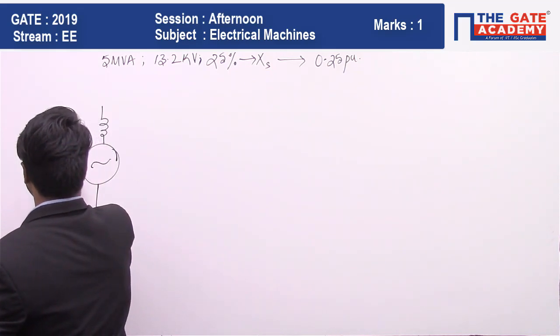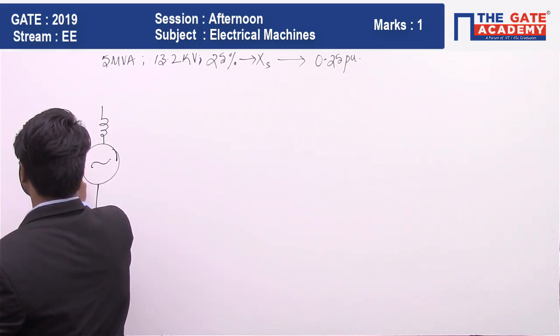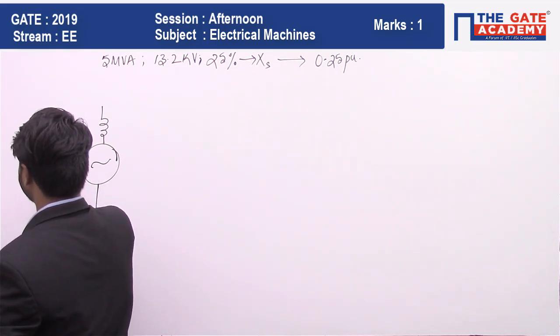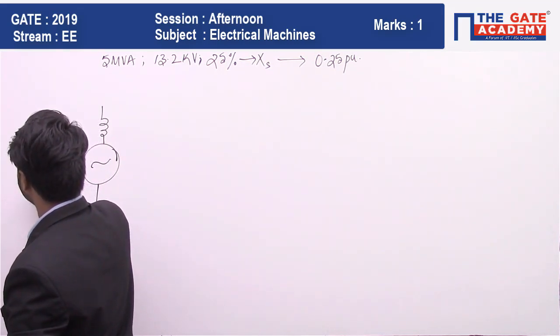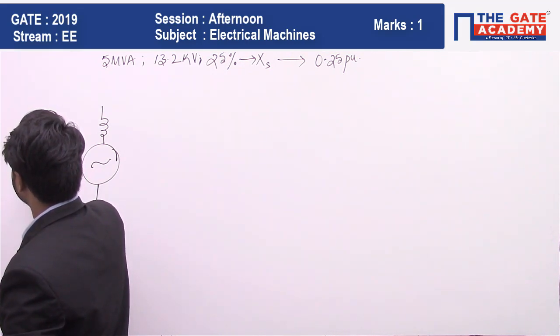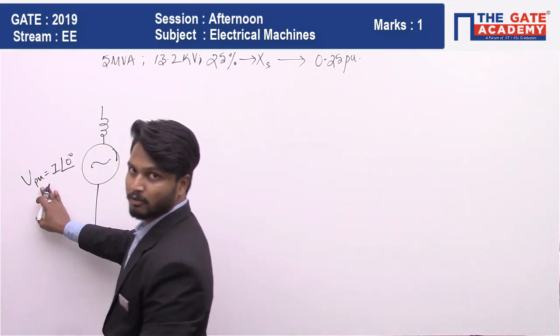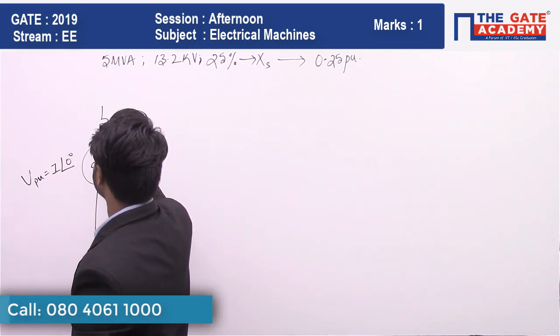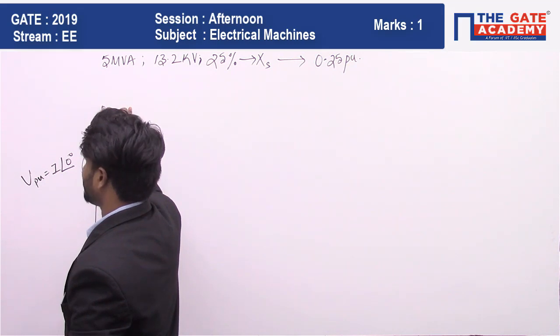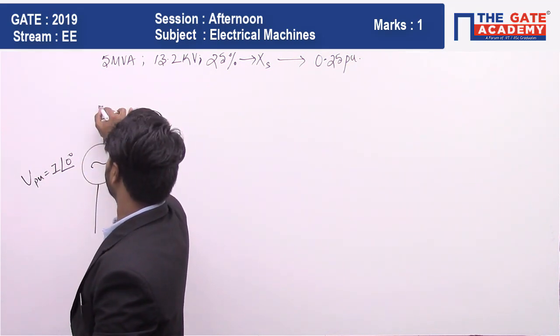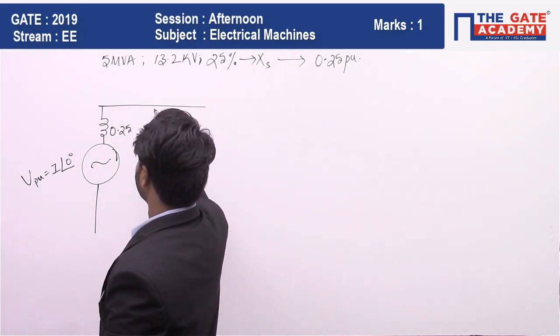Therefore, alternators with 1 per unit voltage, let's say 1 at angle zero. This is the per unit value of voltage rating of the alternator, and the per unit impedance is 0.25 per unit. Five such alternators are connected in parallel with a bus bar.